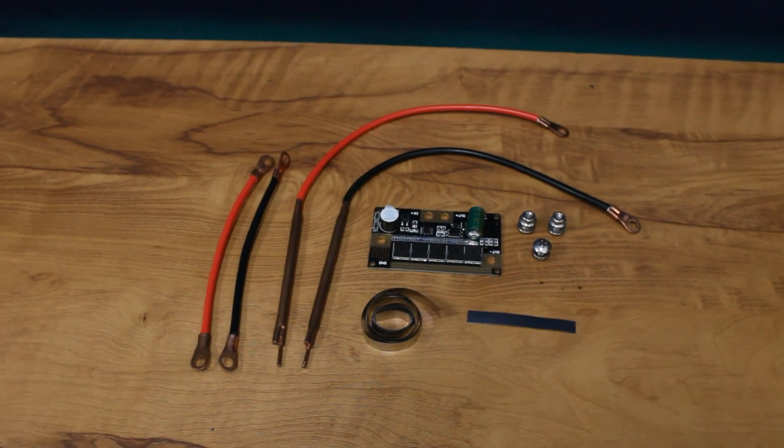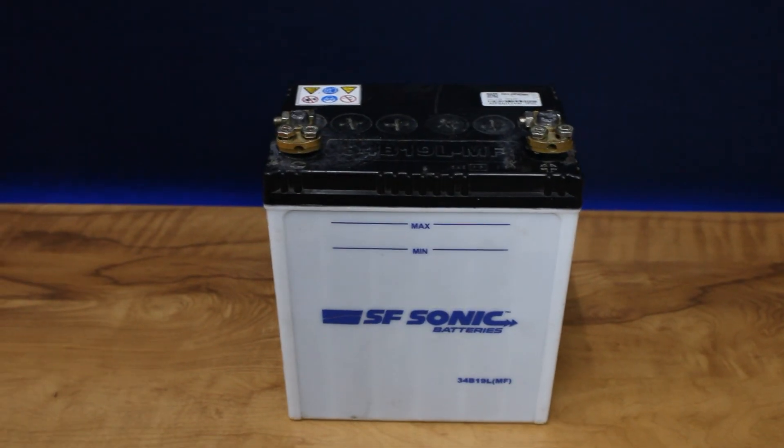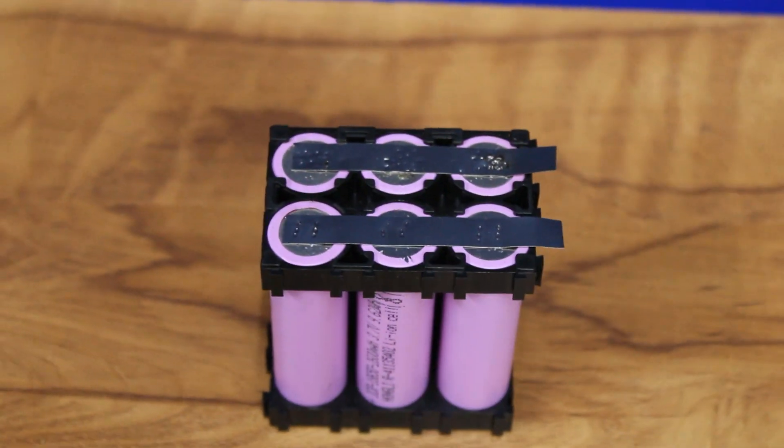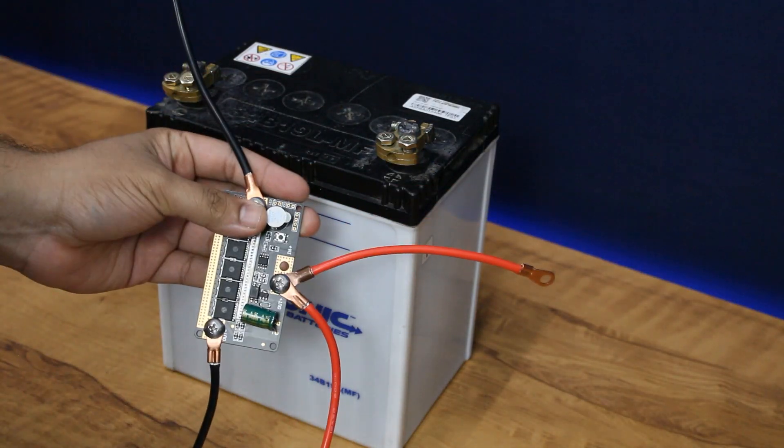This is a DIY spot welder kit which is powered using this 12-volt car battery, which can be used to weld lithium-ion battery cells using nickel strips to create a battery pack.